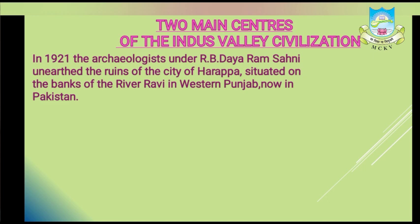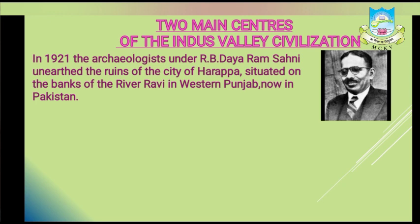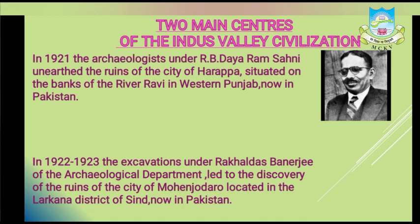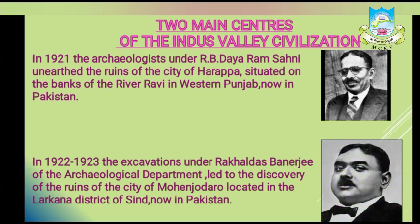While this excavation was going on, Indian archaeologist Dairam Sahani discovered the ruins of Harappa, located on the bank of River Ravi in the Montgomeri district of Western Punjab. The next year, another site of this civilization was discovered by Rakhal Dash Banerji. This site was named Mohenjo-Daro, or Mounds of Death, and it is located on the bank of River Indus in the Larkana district of Sindh. Both these sites are now in Pakistan.